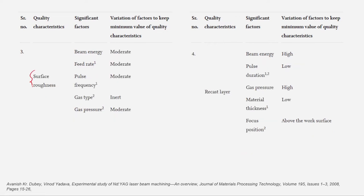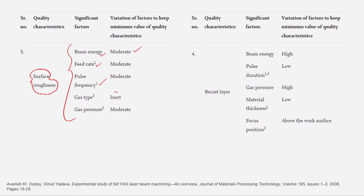For surface roughness, moderate levels of beam energy, feed rate, and pulse frequency achieve the desired quality. The inert gas must be used instead of oxygen to prevent oxidation of the generated surface, and gas pressure should also be at a moderate level.